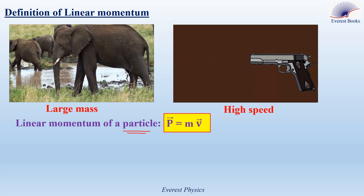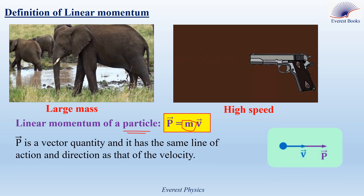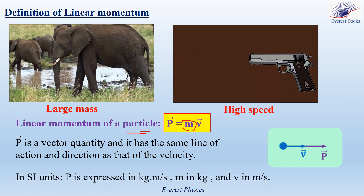It is given by P equals M times V, where P is the linear momentum, M is the mass of the particle, and V is its velocity. Since mass is a positive quantity, the velocity and the linear momentum have the same line of action and direction. In SI units, P is expressed in kilogram meter per second, M in kilogram, and V in meter per second.